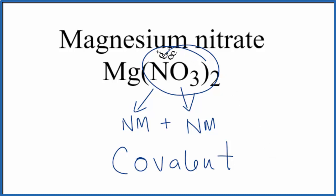This is Dr. B answering the question whether magnesium nitrate, Mg(NO3)2, is ionic or covalent. Thanks for watching.